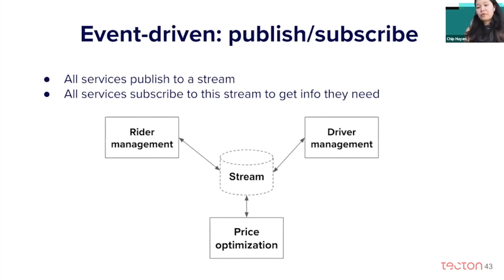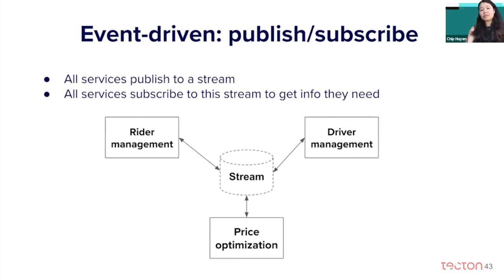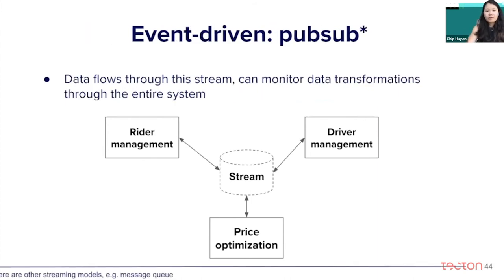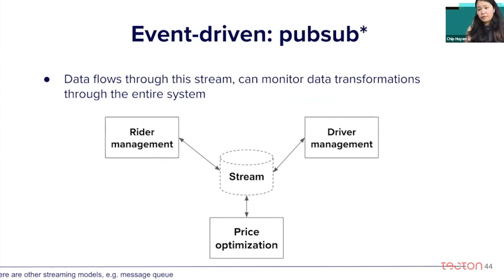Instead of this request-driven model, what if all microservices publish to a stream, and whoever wants information from a service can just subscribe to the stream and get that information? Instead of a mess of inter-service communications, everyone publishes and subscribes to the same stream, getting the information they want. Because data flows through this stream, you can actually build a dashboard to monitor data transformation through the entire system. This model is called pub/sub, short for publish and subscribe, though there are other systems for an event-driven approach as well.